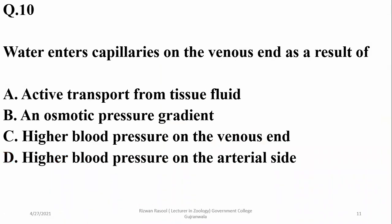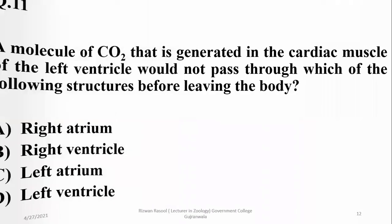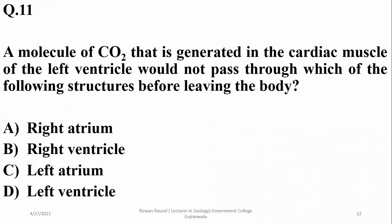Water enters capillaries on the venous end. Water movement is never active in living tissues. Veins have lower blood pressure and arteries have higher blood pressure, but higher arterial blood pressure is not responsible for the uptake of water. An osmotic pressure gradient can cause movement of water into blood capillaries, so that is the right option.